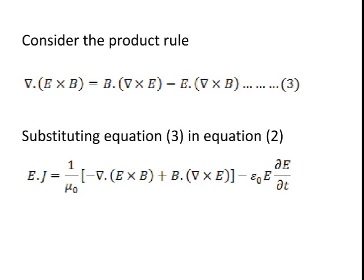Consider the product rule given by equation 3. Substituting equation 3 in equation 2 we arrive at the expression shown below for the dot product of E and J.